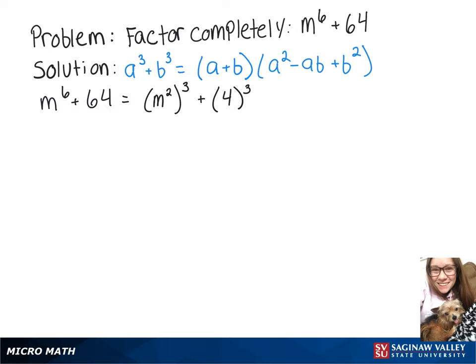Now we have an a value and a b value, so we'll substitute into our formula. We've got m² as our a, plus our b which is 4, times a². m² squared gives us m^4, minus a times b which is 4m², plus 4² which is 16.